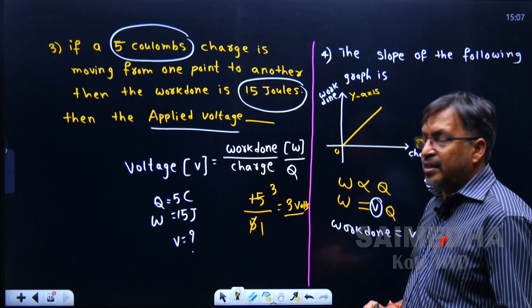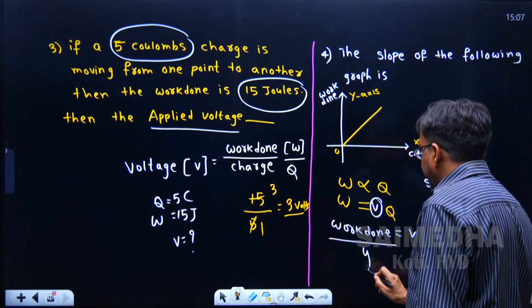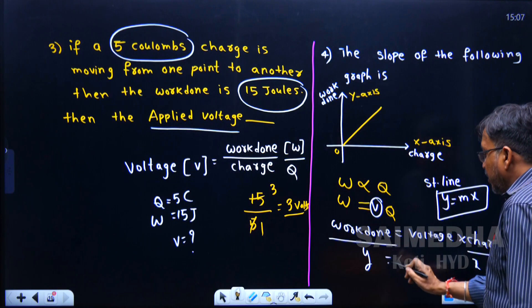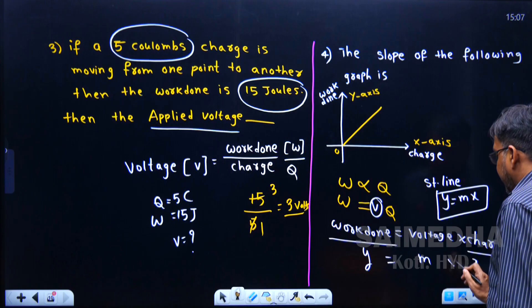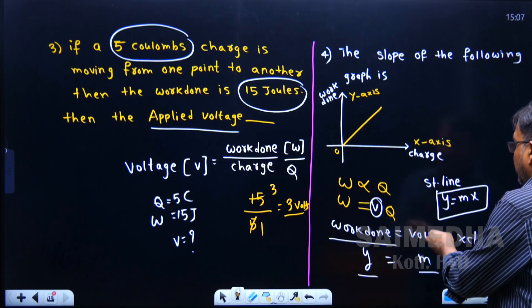What is work done? y-axis. What is charge? x-axis. In the equation y equals mx, what is m? Slope.